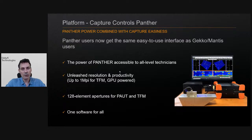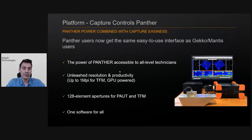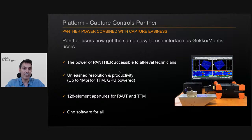Another big thing is the ability to control the Panther with Capture. You can still use the software Acquire for very complex inspections and in-service. But now you also have the option to use the easy-to-use interface known on the Gecko and the Mantis with the Panther, and benefit from all the power of the Panther. Since the graphic card of your PC does the TFM calculation, you have way more power — you can calculate TFM with up to 1 million pixels per group and still have a really good scanning speed. The Panther being a 128-element unit, you can also use full apertures with 128 elements.